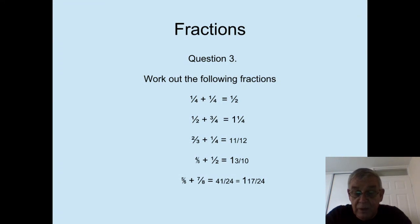Thirteen over ten is a top-heavy fraction, or an improper fraction. So we divide the thirteen by ten, which goes once. That gives us one whole number and then three tenths left over. So that gives us the final answer, one and three tenths.